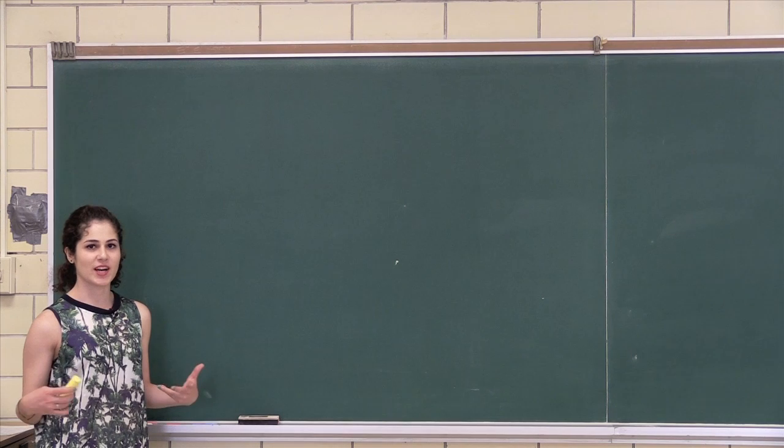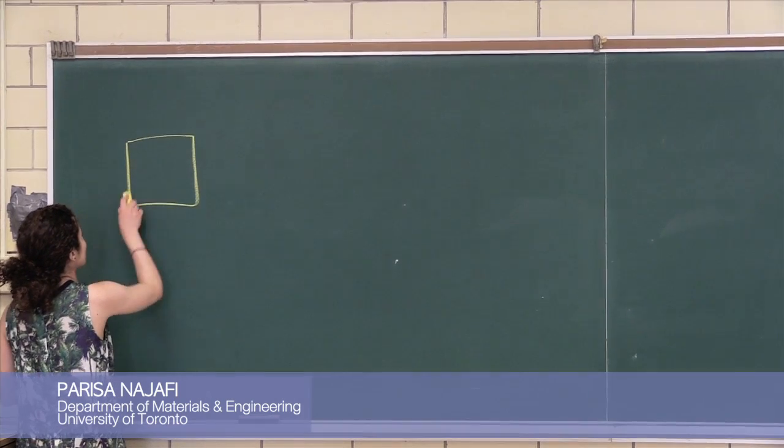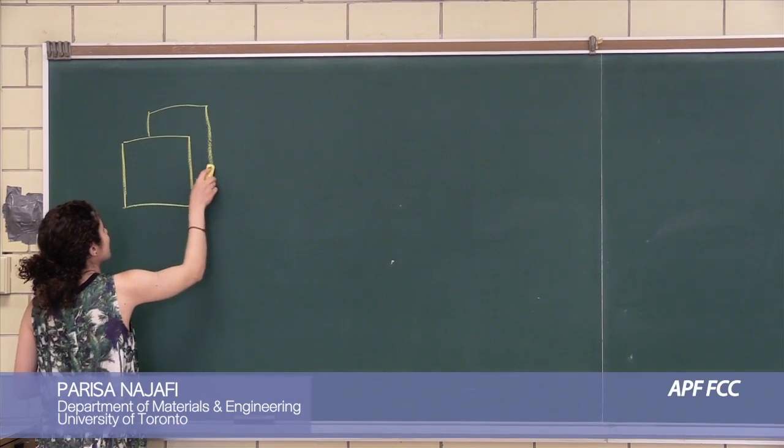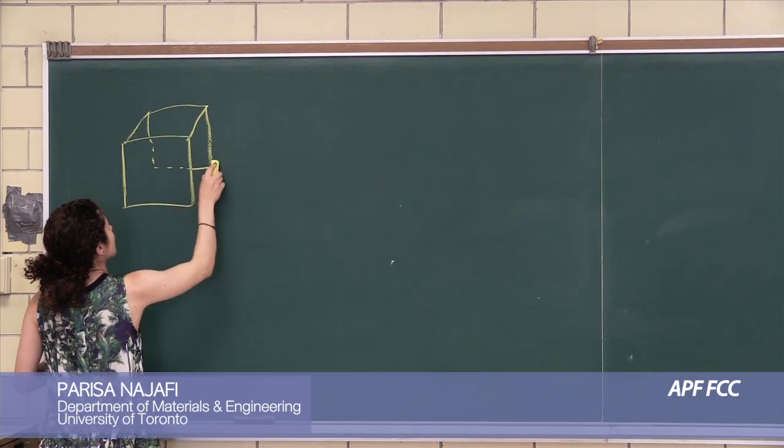So let's start off by drawing the FCC structure. We have two squares, basically, connecting them.